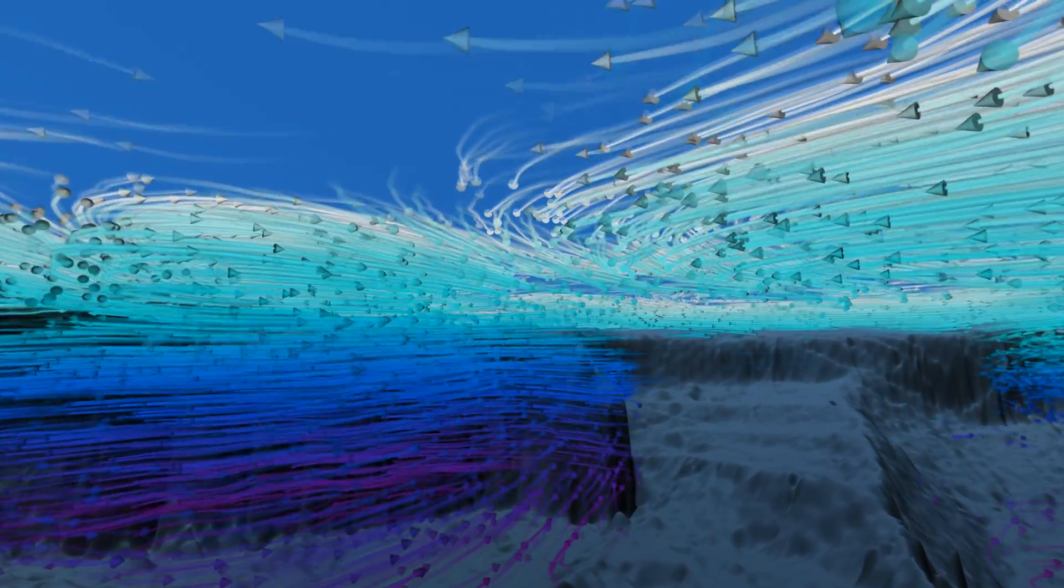Below the surface, they mix with cold, deep currents that swirl around undersea ledges and mountains.